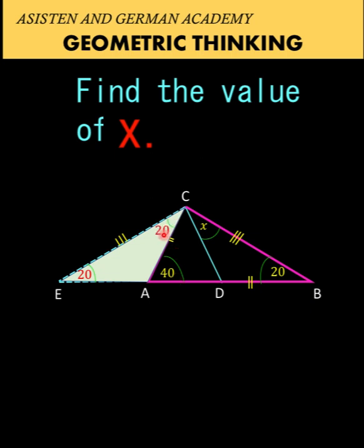This implies that angle ECA must be 20 degrees. Therefore, triangle ECA is also an isosceles triangle.